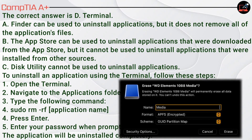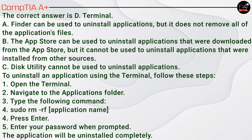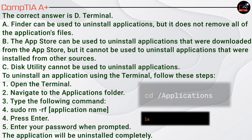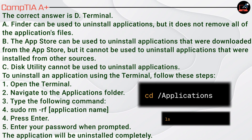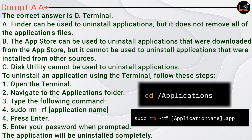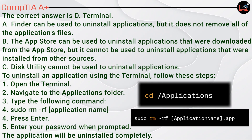To uninstall an application using the Terminal, follow these steps: 1. Open the Terminal. 2. Navigate to the Applications folder. 3. Type the following command: sudo rm -rf [application name]. 4. Press Enter. 5. Enter your password when prompted. The application will be uninstalled completely.